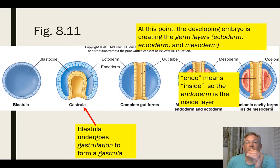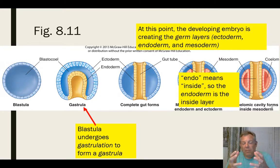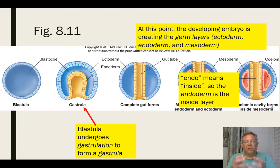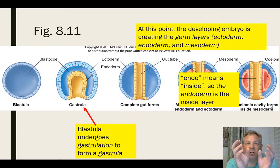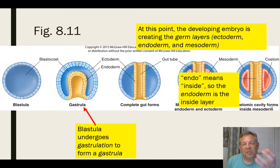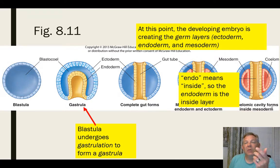When gastrulation happens, the developing embryo forms several different germ layers — you start to see the cells differentiate into different types. Every one of you started as a single cell; that cell divided, and those cells divided. But if you look at yourself now, you've got very different cells: skin cells, eye cells, stomach and heart cells, toe cells. At some point during development, those cells have to start differentiating into three different germ layers called the ectoderm, the endoderm, and the mesoderm.